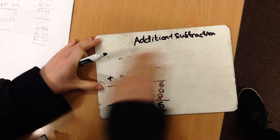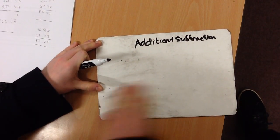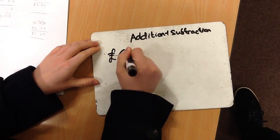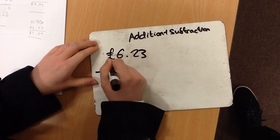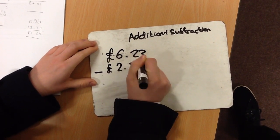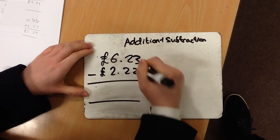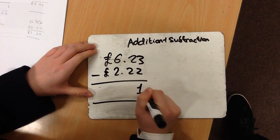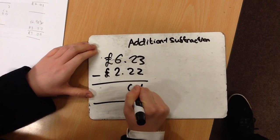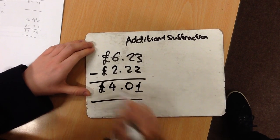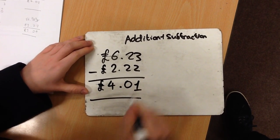Now then, the next sum that we will do is £6.23 minus £2.22. This sum does not involve exchanging. So, £3 minus £2 is £1. £20 minus £20 is £0. £6 minus £2 is £4. The answer is £4.01.